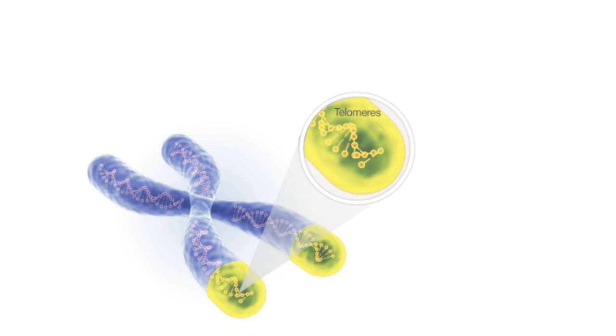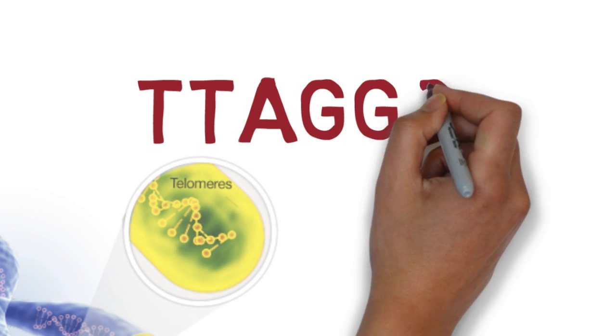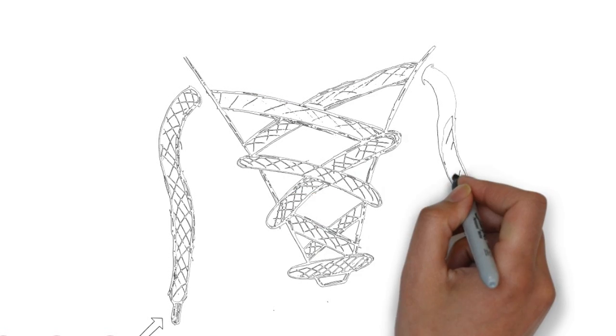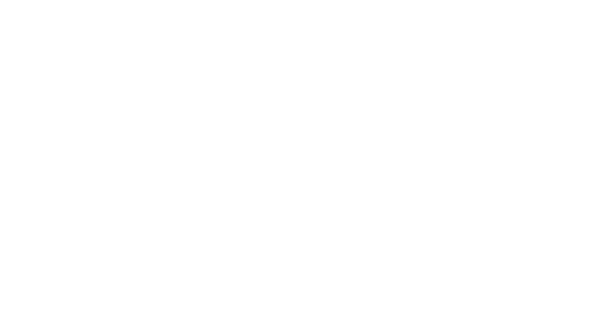Well, technically, the key is telomeres, non-coding segments of DNA with the sequence TTA-GGG. They can be compared to the plastic tips on your shoelaces. They cap the ends of your DNA so that they don't get worn down. Let's dive into why we need these telomeres in the first place,